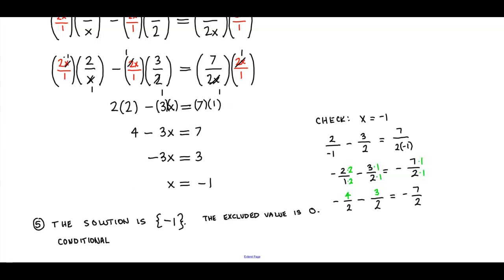Now when we combine like terms, we get negative 7 over 2 on the left side, negative 7 over 2 on the right side, which tells us that it checks.